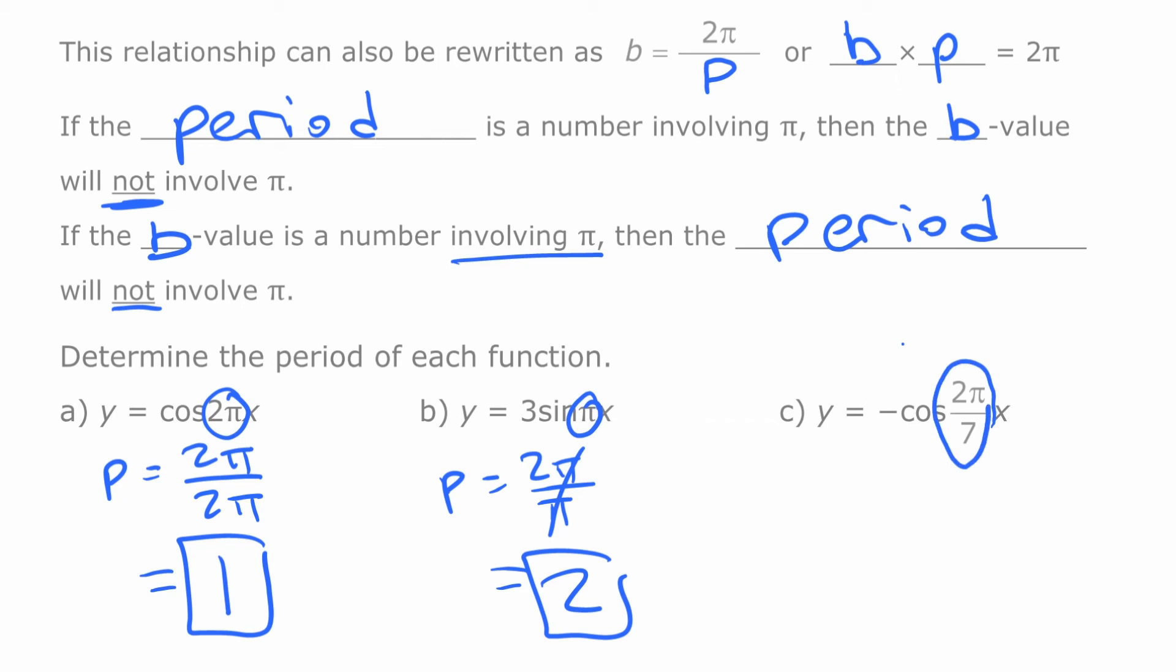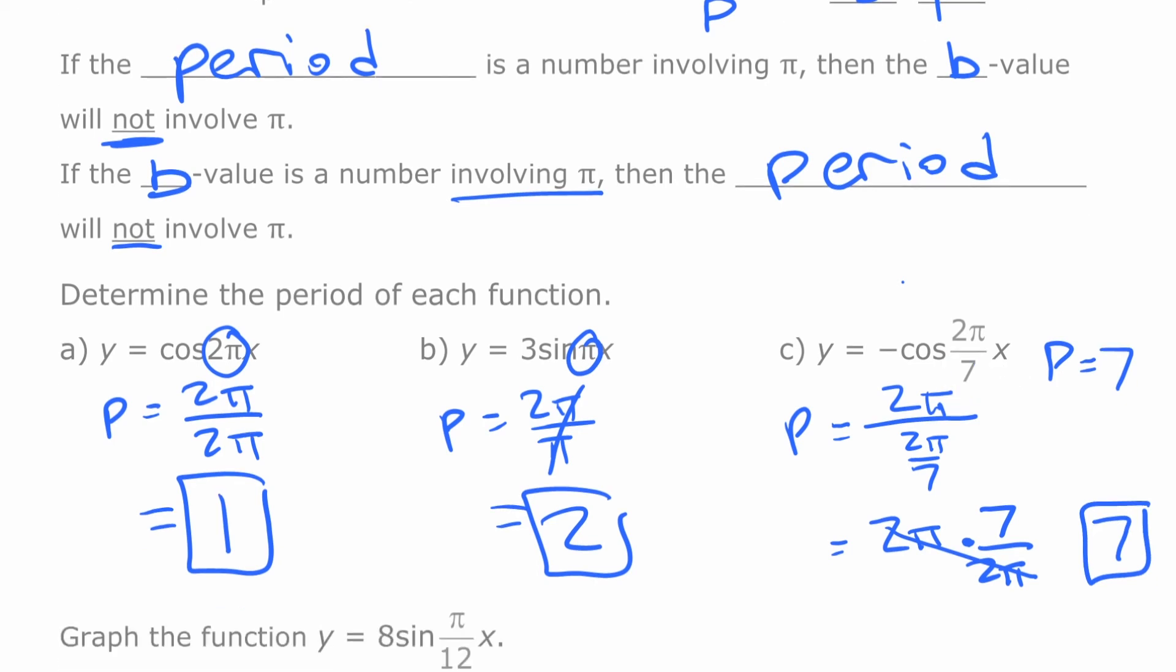And the last one here, 2π over 7. If the b-value is 2π over 7, if we recognize that when the b-value is 2π over a number, the number is the period, we can just write the period is 7. If we don't happen to recognize that, even if we use this formula, it's still going to work out. Because if we write the period is 2π divided by the b-value, which is 2π over 7, we can simplify this. 2π divided by 2π over 7 is like 2π times 7 over 2π. Dividing by a fraction is like multiplying by the reciprocal, and those cancel, and you're just left with 7 there.